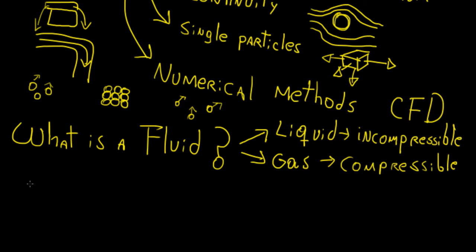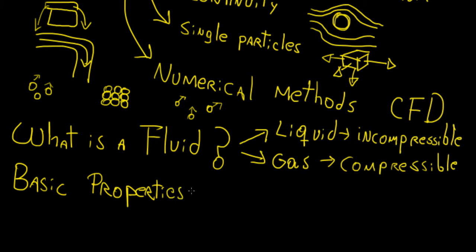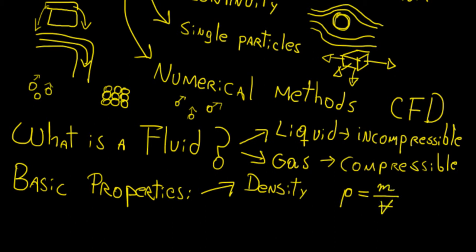We also have some basic fluid properties. The first is density — the amount of mass contained within a particular unit of volume, represented by the Greek letter rho, so rho equals mass over volume. The reason we use a capital V with a horizontal line through it is that in fluid mechanics we deal a lot with velocities and other things that use the letter V, so this notation distinguishes volume from velocity. The units for density are kilograms per meter cubed.